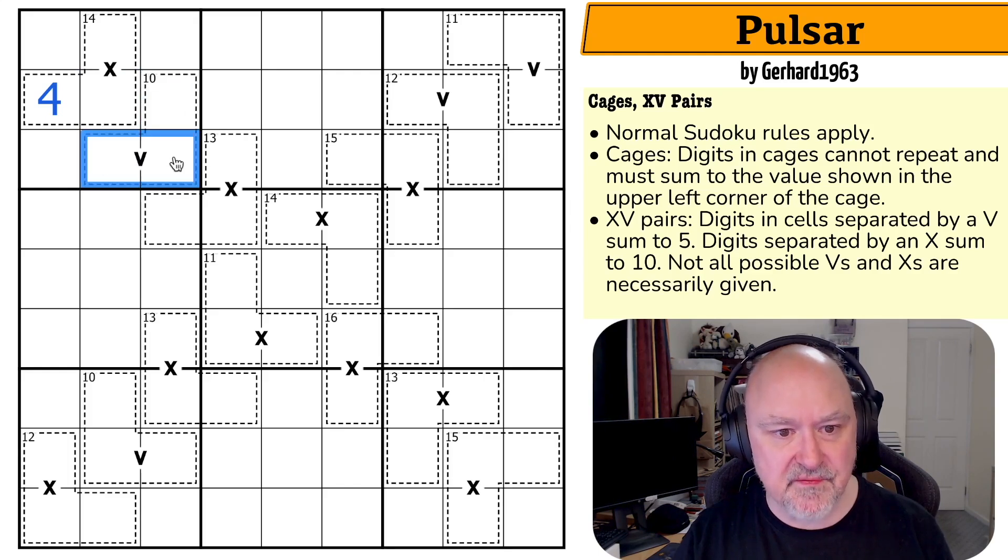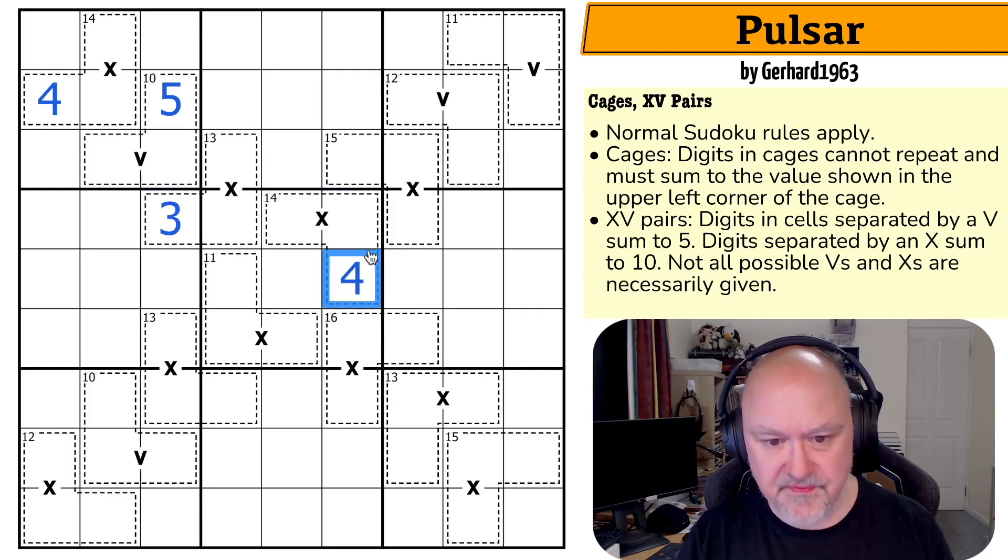14 minus 10 is four. 11 minus 10 is one. 16 minus 10 is six. 15 minus 10 is five. 12 minus five is seven.